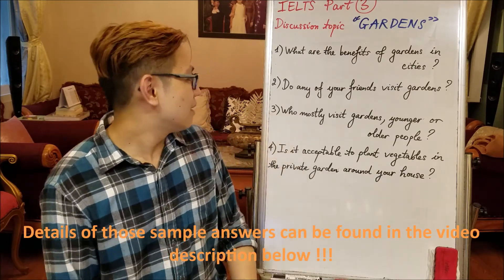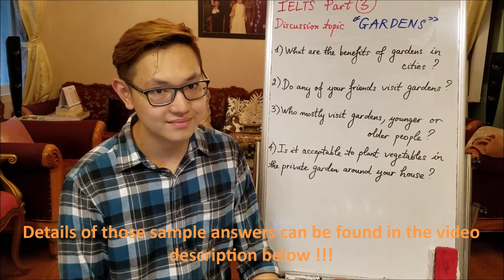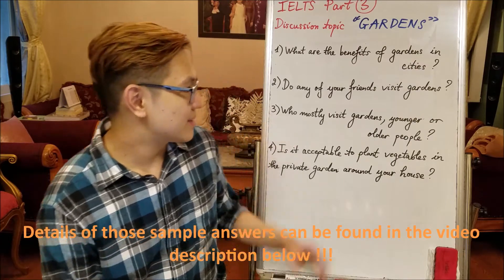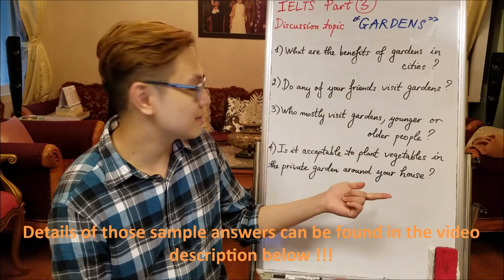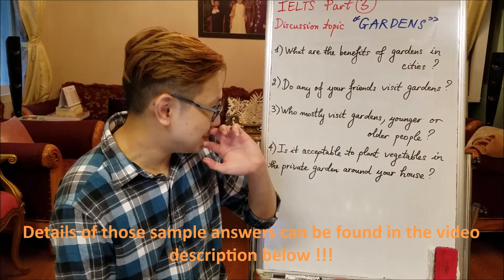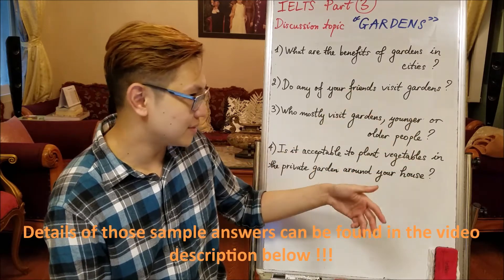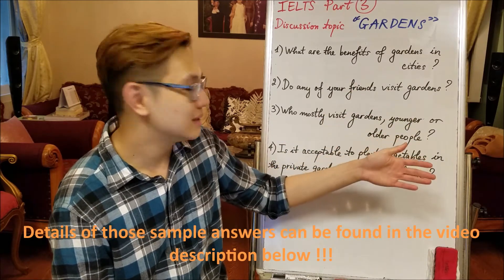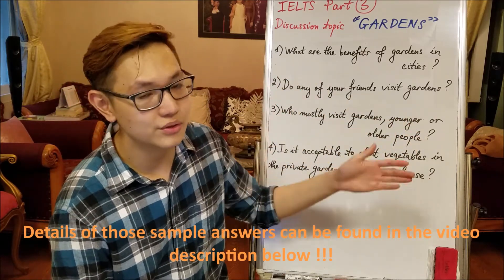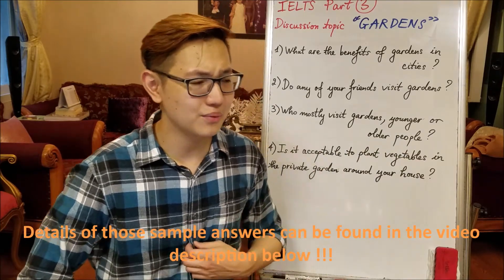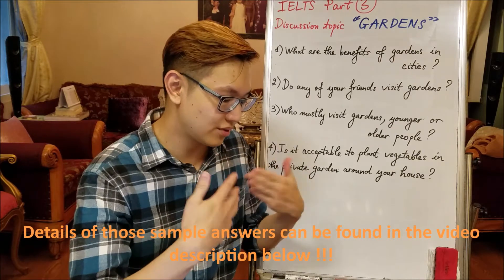Question number three: who mostly visits gardens, younger or older people? Basically, you have to discuss this one just like a writing task. So you have to say pros and cons — for younger people, you have to say yes they do, no they don't, something like that, and the same for older people as well. And finally, you have to provide a sentence to end it all, like a conclusion. So it's kind of like a writing task, but being vocally expressed out.